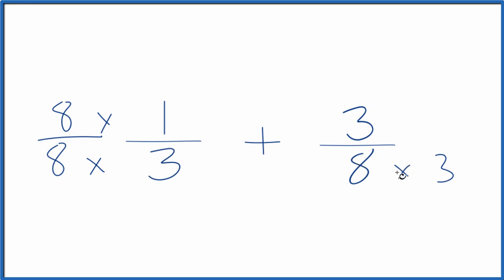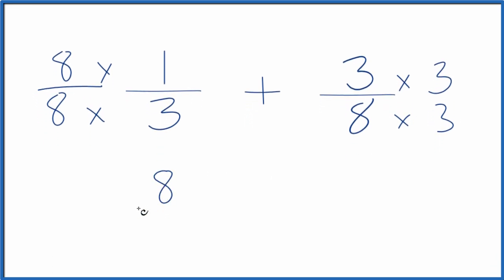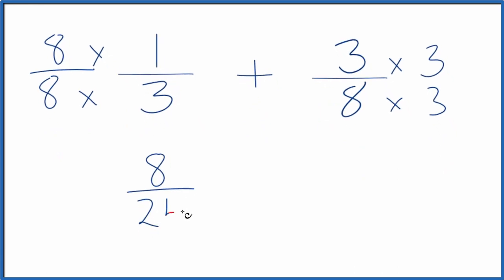Over here, since I multiplied the denominator by 3, let's multiply the numerator. So 8 times 1, that's 8. 8 times 3 is 24. Over here, 3 times 3 is 9. And then 8 times 3, that's 24.